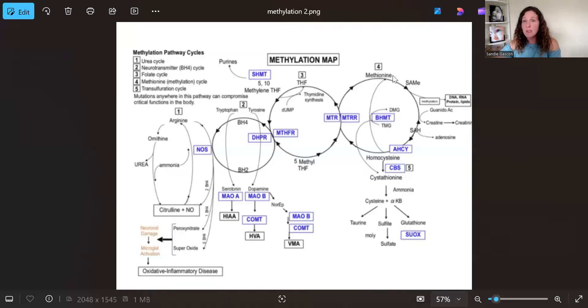But we also have another mutation here called BHMT, which also recycles it back to methionine. Now for a lot of people, they see the MTHFR mutation, they start supplementing, and they do no other labs. They start to feel a lot worse. This often happens in children, where parents think they have MTHFR and they start giving them methylfolate. We see a lot of behavioral issues, anger, temper tantrums.